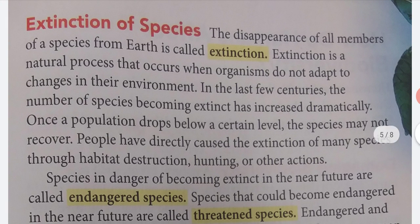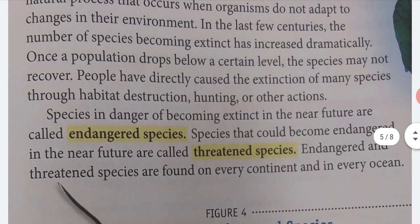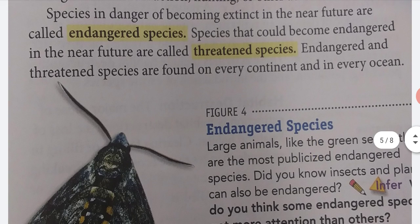Extinction of Species. The disappearance of all members of a species from Earth is called extinction. Extinction is a natural process that occurs when organisms do not adapt to changes in their environment. In the last few centuries, the number of species becoming extinct has increased dramatically. Once a population drops below a certain level, the species may not recover. People have directly caused the extinction of many species through habitat destruction, hunting, or other actions. Species in danger of becoming extinct in the near future are called endangered species. Species that could become endangered in the near future are called threatened species. Endangered and threatened species are found on every continent and in every ocean.